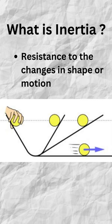What is inertia? Inertia is a type of resistance in the body. It is a natural tendency of objects that resist changes, meaning it will resist changes in shape and resist motion.